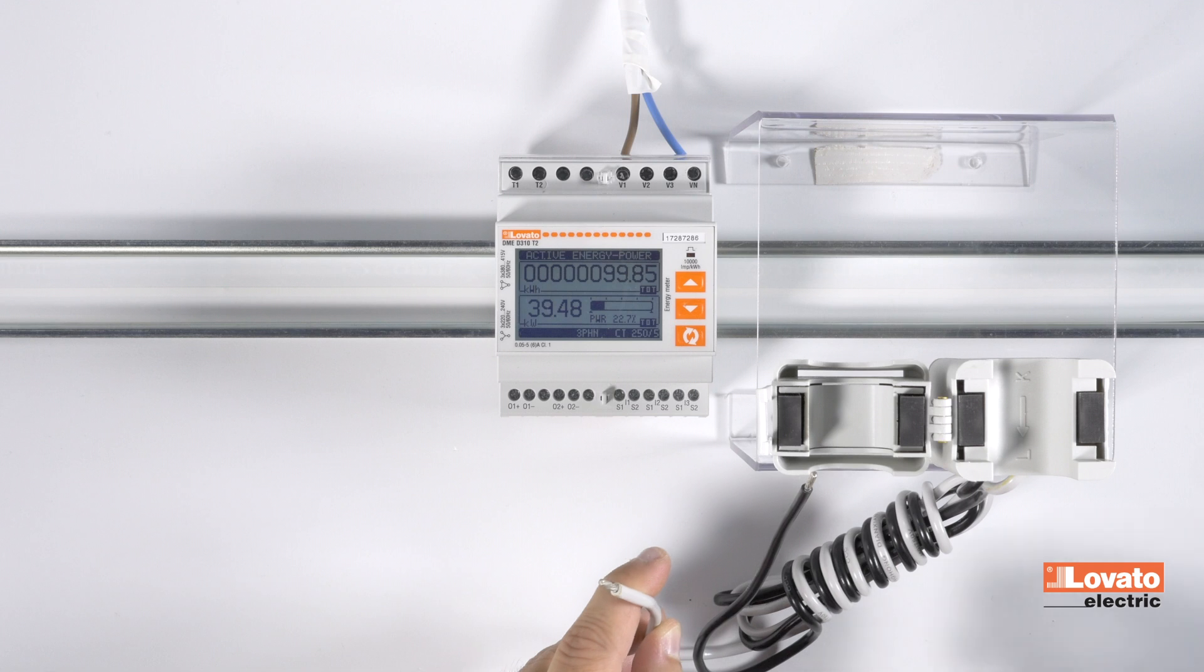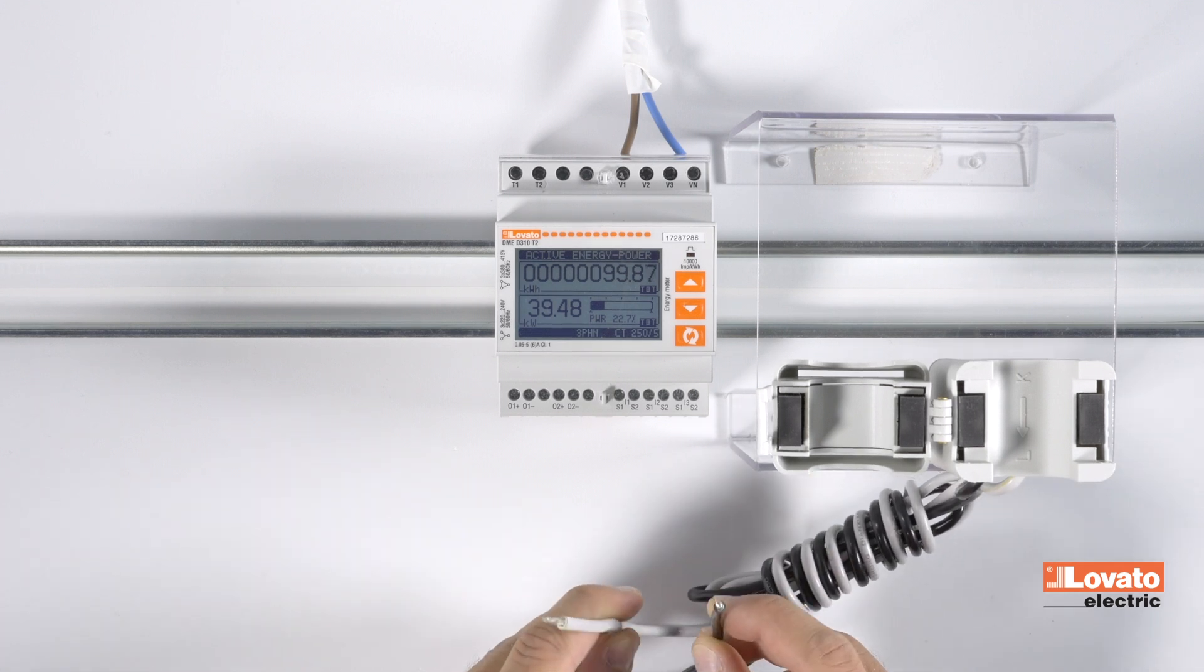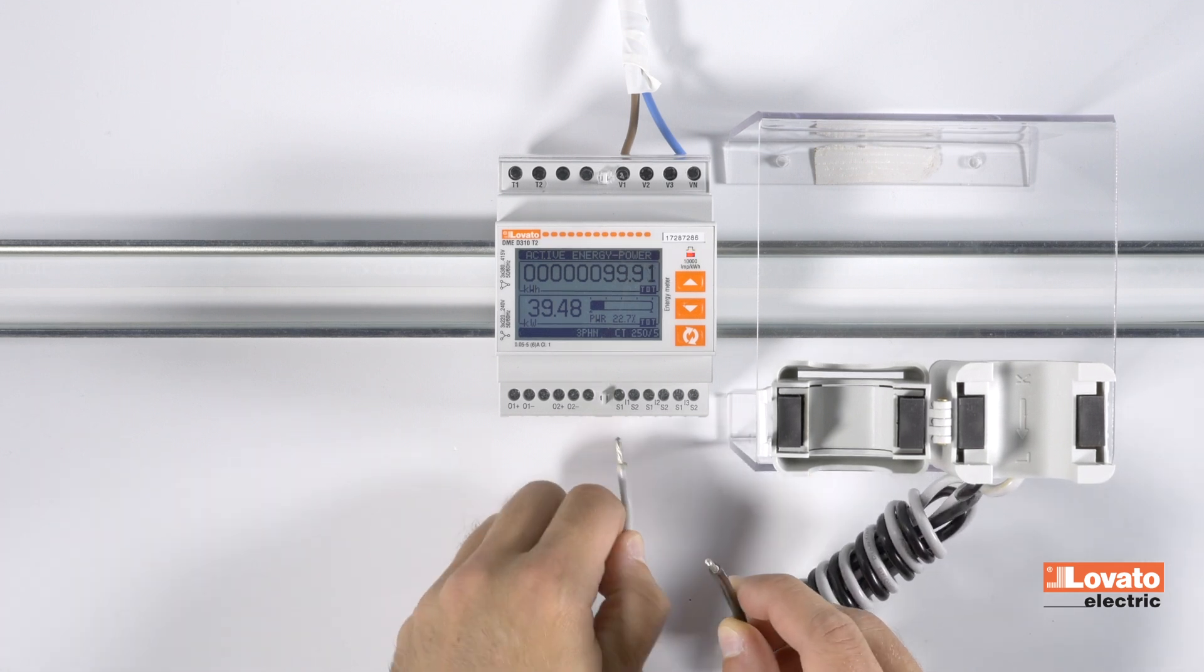The connection with the energy meter is made using the two wires. The grey one, marked S1, and the black wire, marked S2.